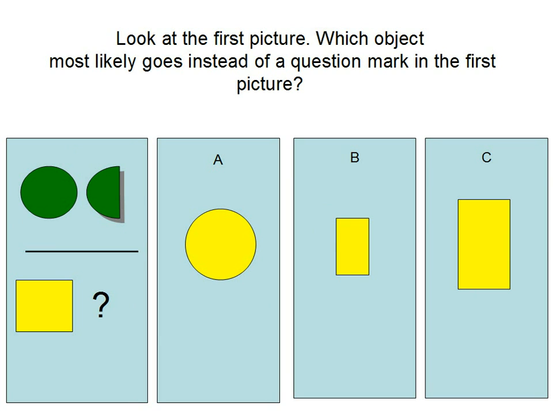Look at the first picture. Which object most likely goes instead of a question mark in the first picture?